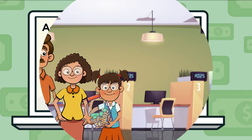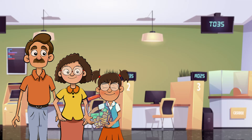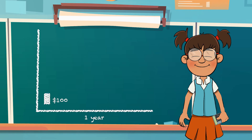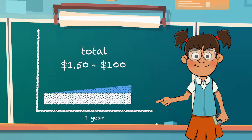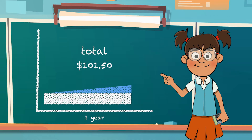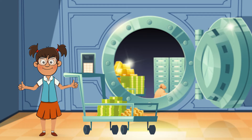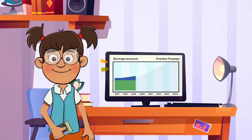For example, our friend Frankie Finance had her parents help her open up a savings account last year. She put $100 in the account and earns 1.5% yearly interest on that amount, which means she earned an extra $1.50 last year, bringing the total in her savings account to $101.50. This year, she plans on putting more money in her savings account, which will earn her even more interest over time.